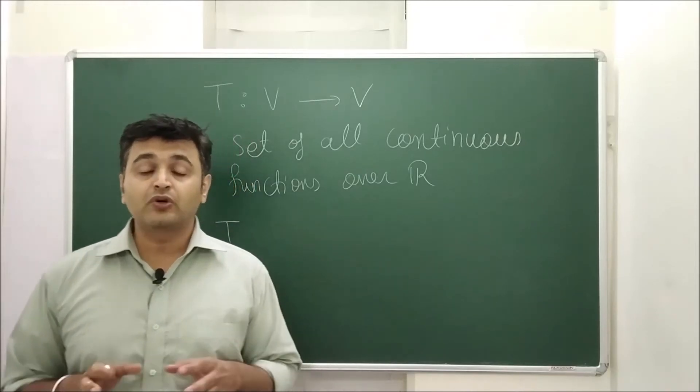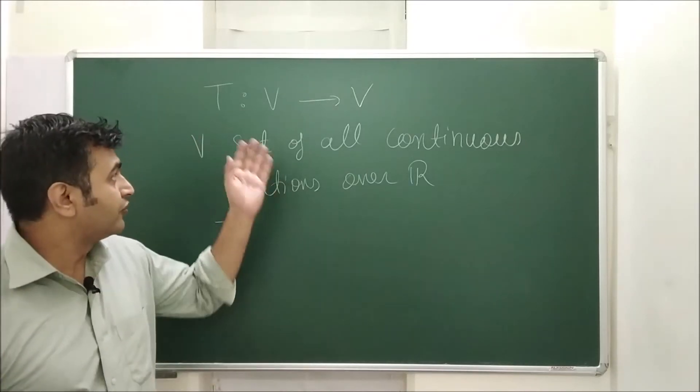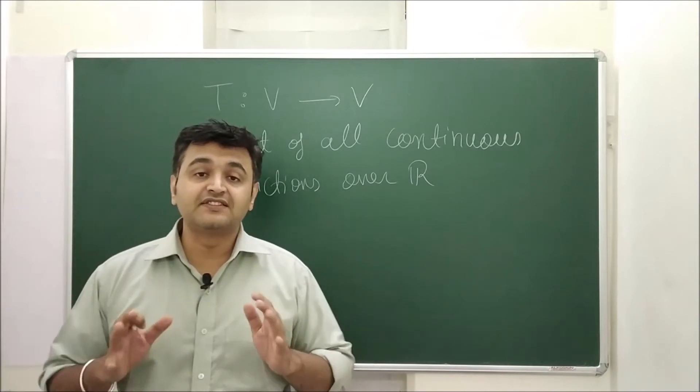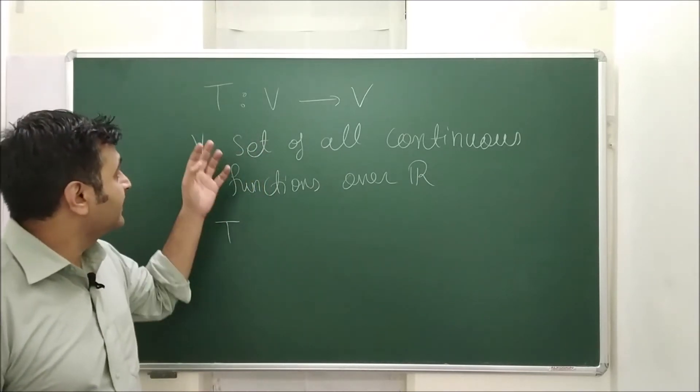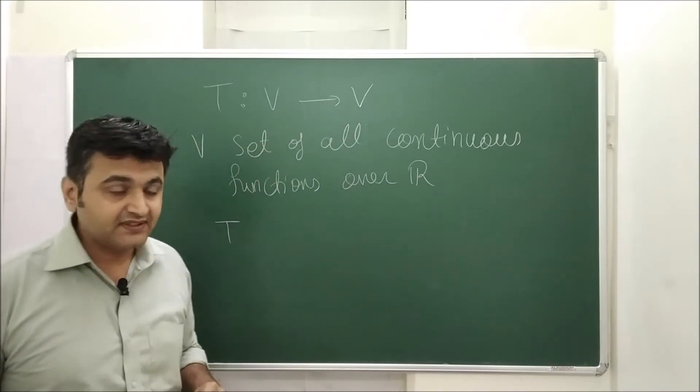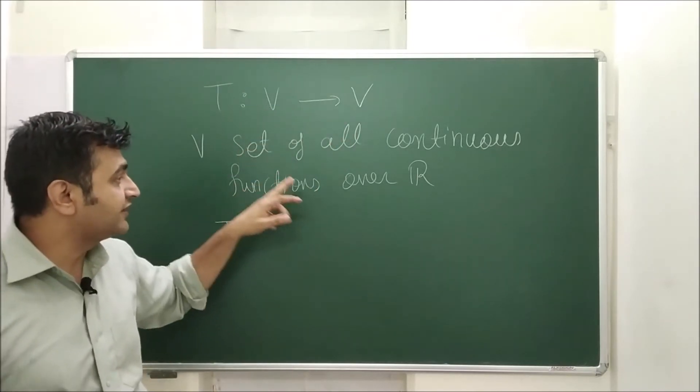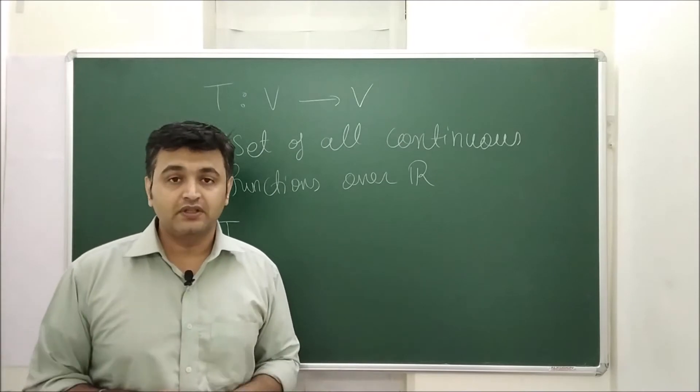Hey everyone, so today we are going to look at an example or we are going to see a linear map which has no real eigenvalues. So I am taking a t from one vector space to the same vector space. What is my vector space? It is set of all continuous functions over real numbers.